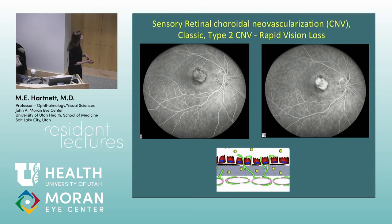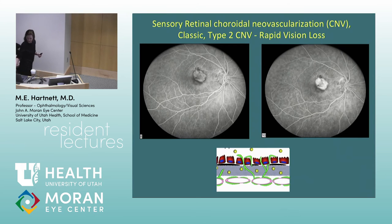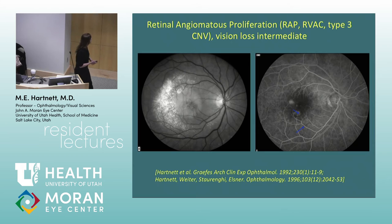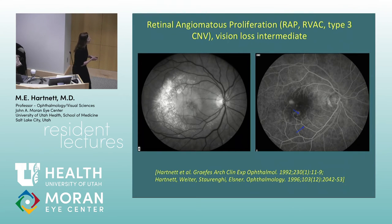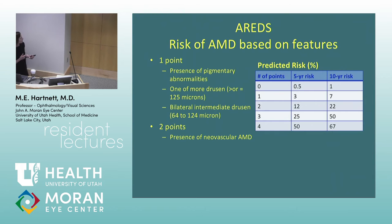Type 2 or classic choroidal neovascular membrane shows leakage late on the angiogram, when vessels come above the RPE into the neurosensory retina. In RAP, or retinal angiomatous proliferation, you see AMD signs including a pigment epithelial detachment with exudates, hemorrhages or retinal vascular abnormalities, and an angioma with leakage. It's associated with the center of the PED, not the edge.